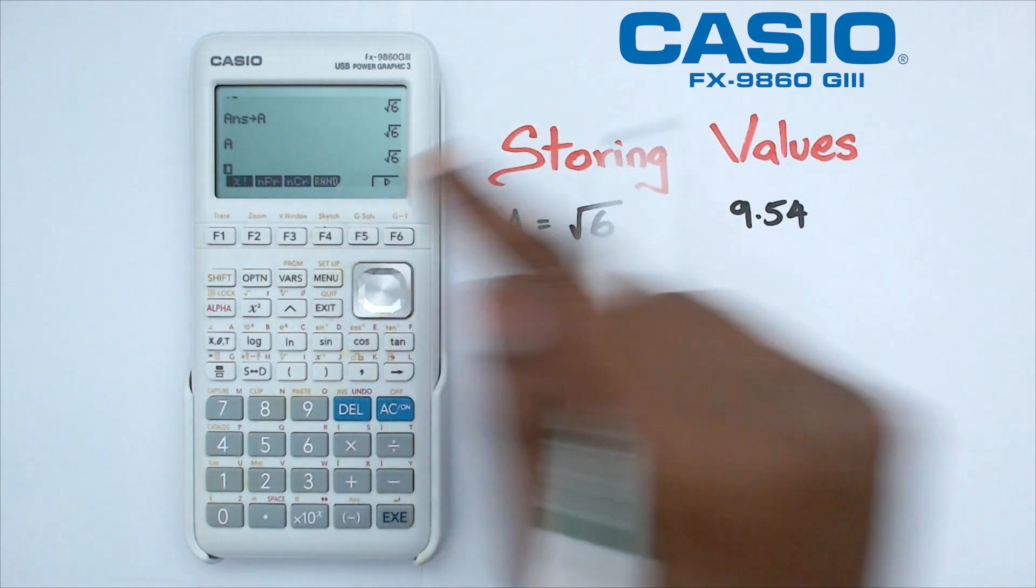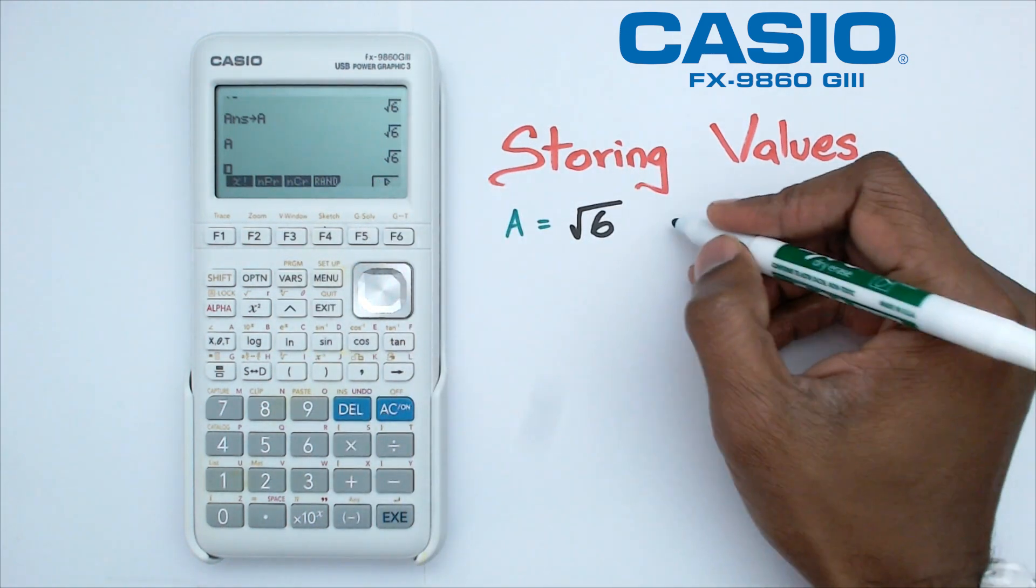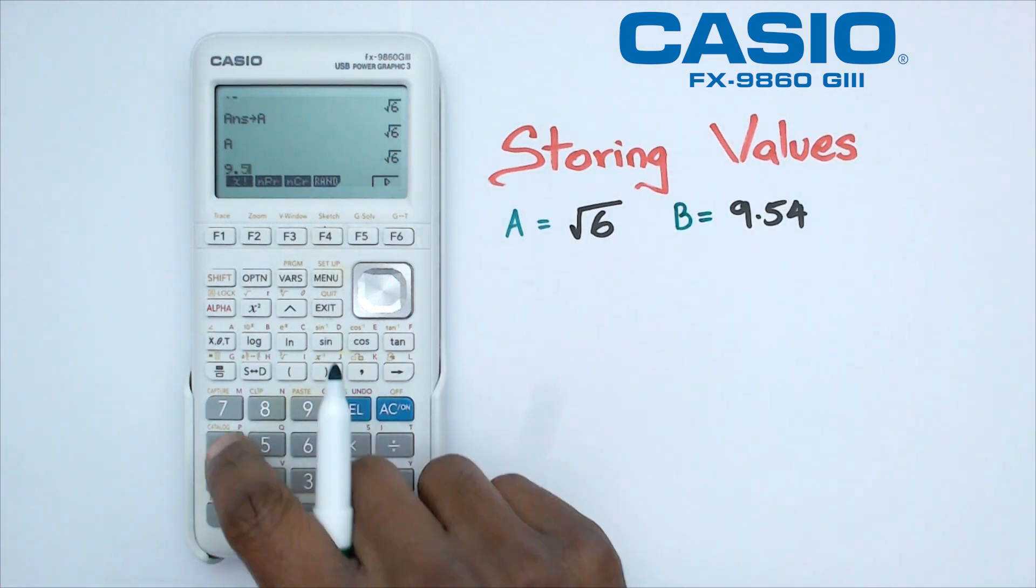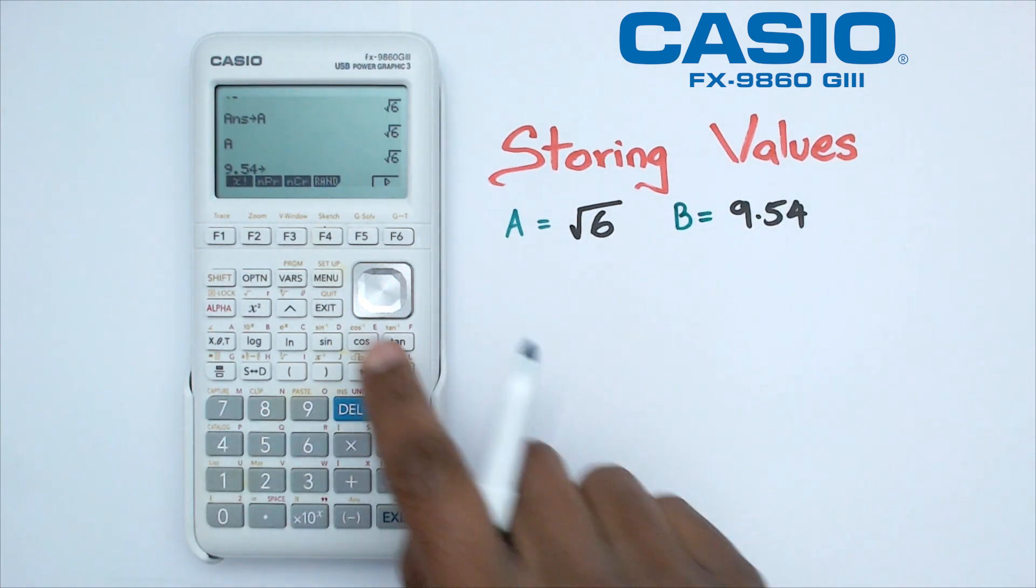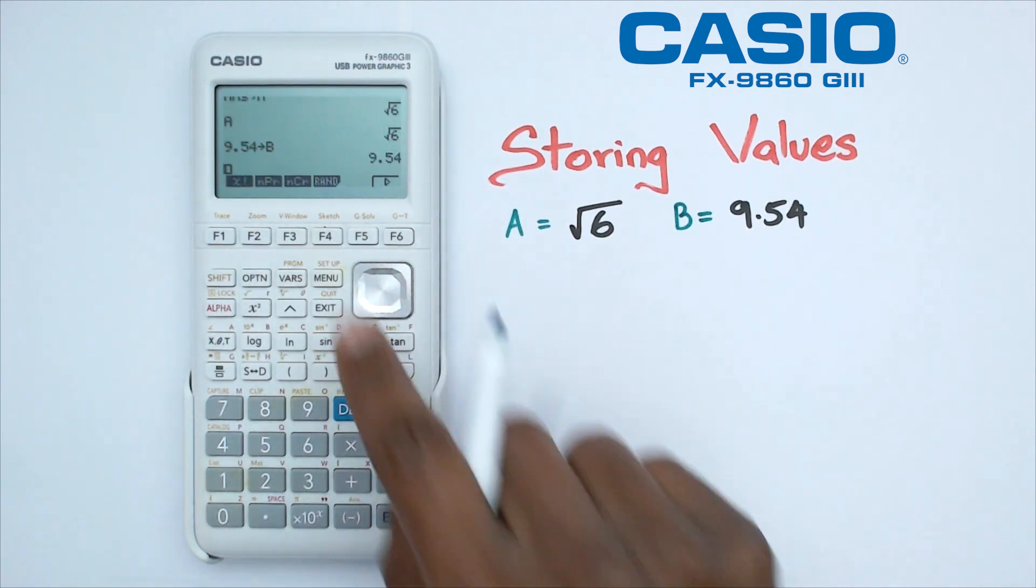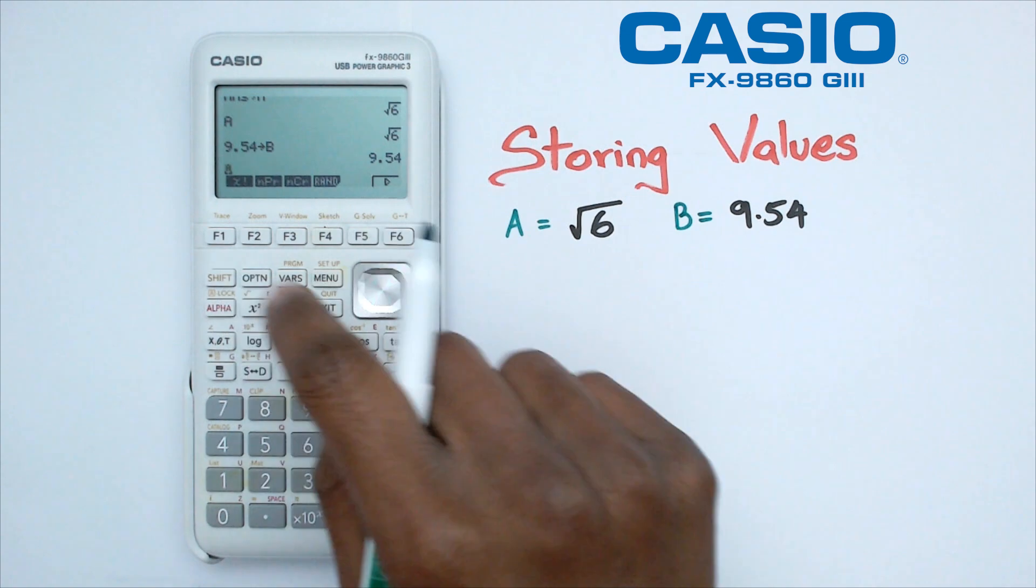Now let's say I take 9.54 and I'm going to put that as the letter B. So I'm going to go 9.54 and I'm going to store it—so that's that little arrow there—and I'm going to put alpha B.